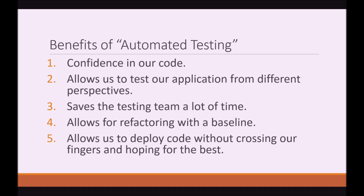Think of testing an application as an onion with many layers. At the top level we can test how a user interacts with our website by clicking around, and we can test the core of our application — right down to single methods and single classes — and build our way up. This sort of testing saves the testing team a lot of time, and it also saves you as a developer a lot of time as well.